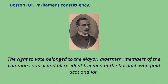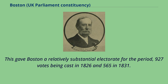The right to vote belonged to the mayor, aldermen, members of the Common Council, and all resident freemen of the borough who paid Scot and Lot. This gave Boston a relatively substantial electorate for the period, 927 votes being cast in 1826 and 565 in 1831.